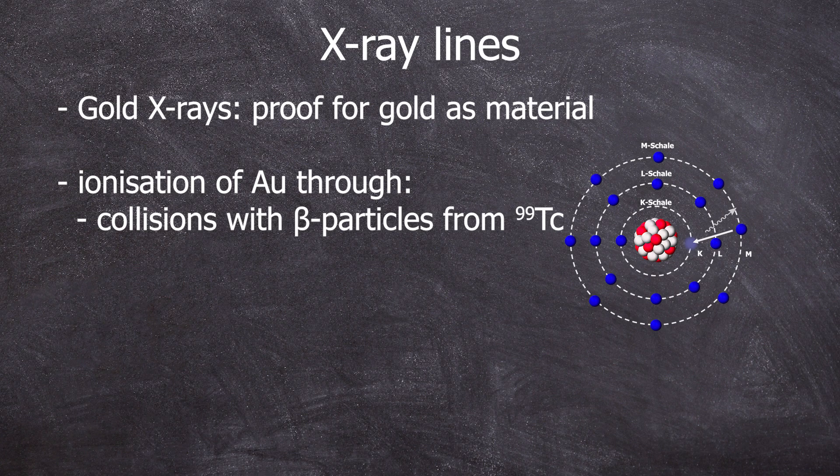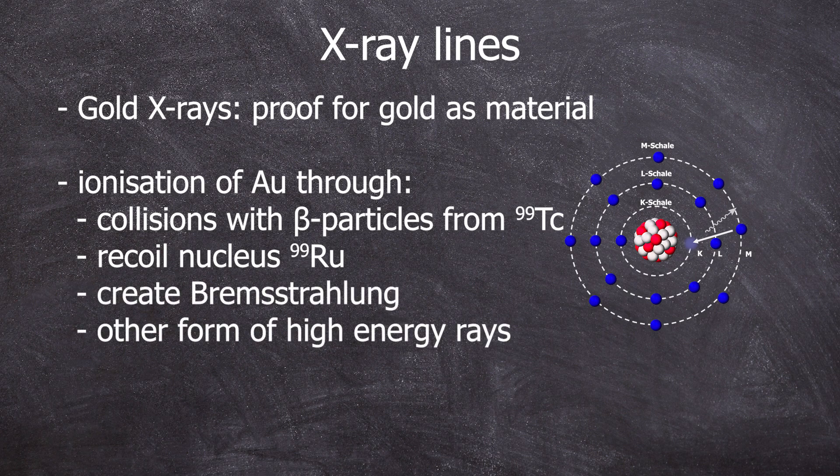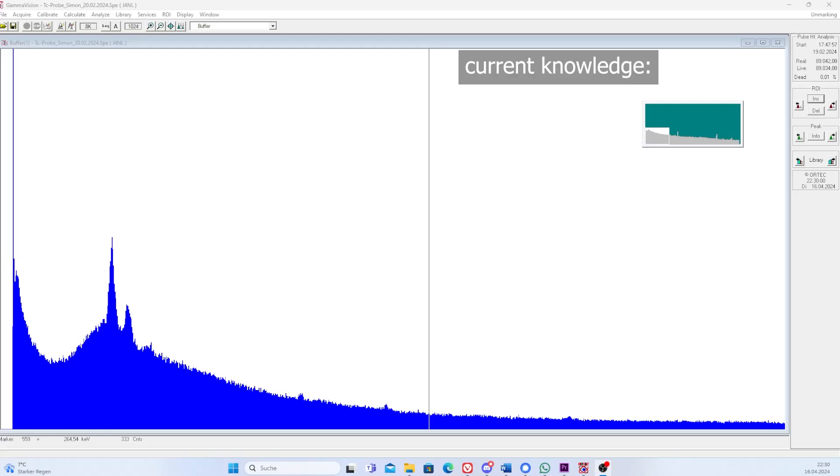In this case, it can only be the silvery mystery metal that is radioactive and ionizing the gold. The K-electrons can be knocked out by collisions with the electrons, that is the beta radiation of technetium. Or when technetium decays, the daughter nucleus, ruthenium, receives a recoil, and this recoiled nucleus can also cause ionization. Or through several other effects.